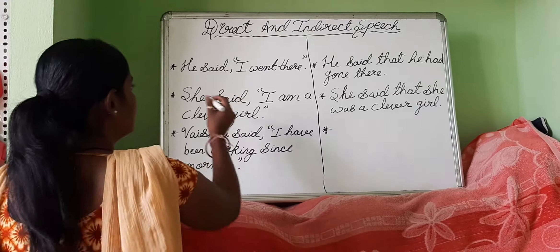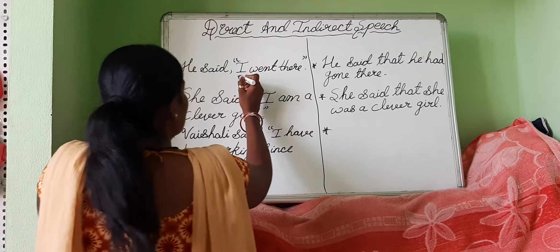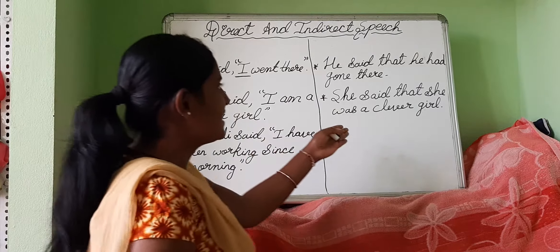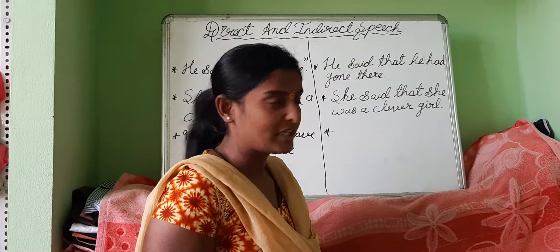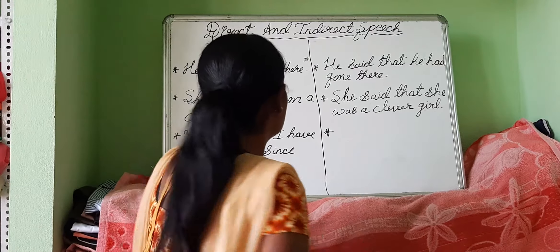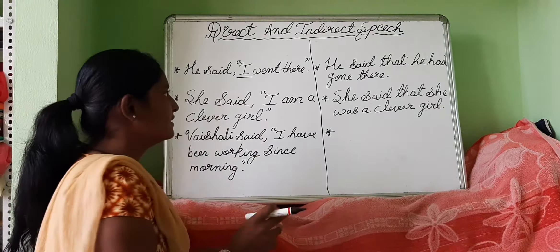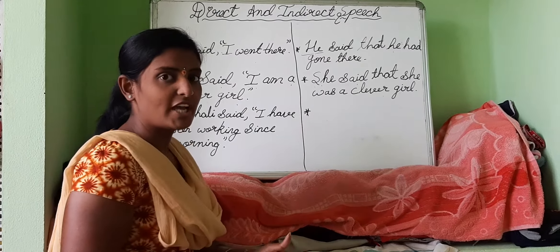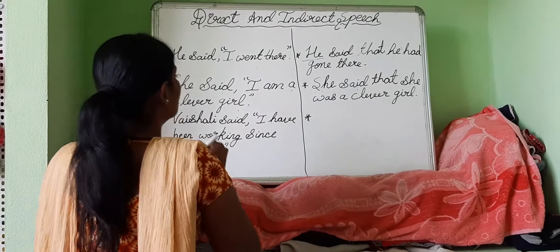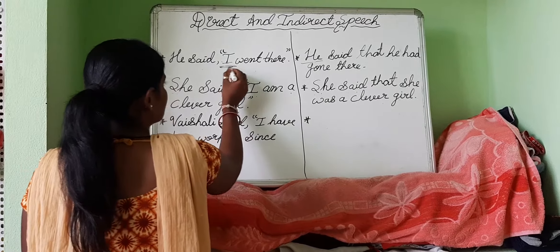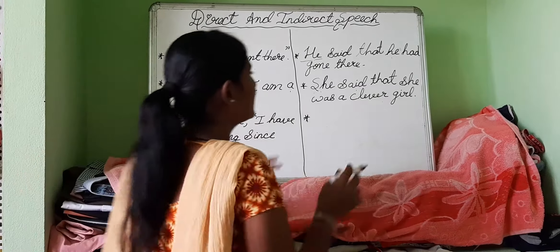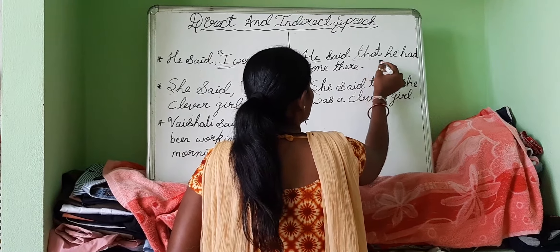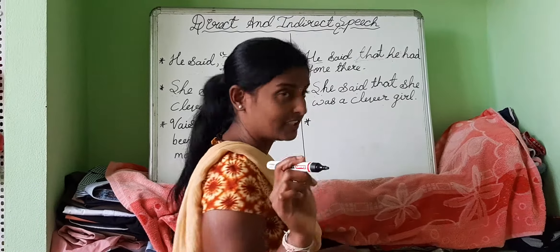The second rule is that the main speech has been started with the capital letter. And in indirect speech, they don't have any type of capital letters or inverted commas. The third rule is, in direct speech, we should not have to add any word before the main sentence. But in indirect speech, we have to add a word before the main sentence.